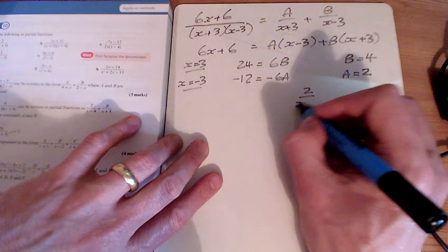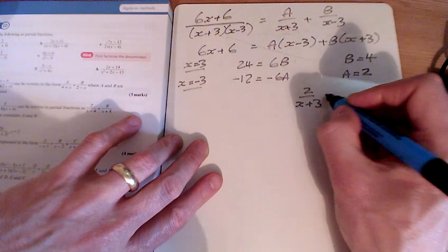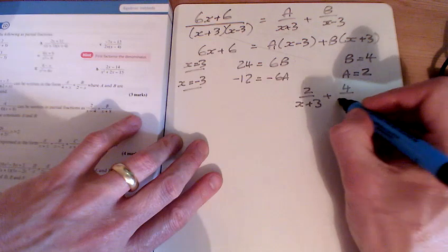So the answer to this one, 2 over x plus 3 plus 4 over x minus 3.